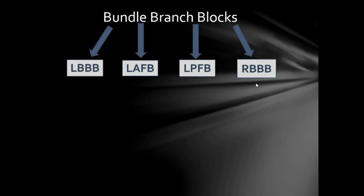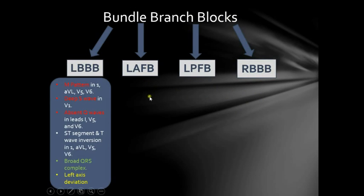Let's start with Left Bundle Branch Blocks. They are characterized by the following on an ECG: first, an M-pattern of the QRS complex in the lateral leads — leads 1, AVL, V5, and V6; a deep S wave in V1; absent Q waves in the lateral leads, leads 1, V5, and V6, but not AVL; and ST segment and T wave inversion in the lateral leads.